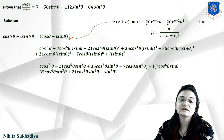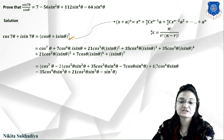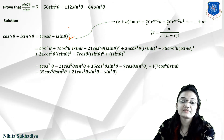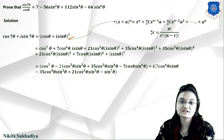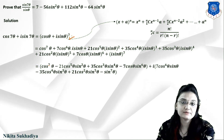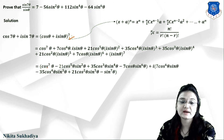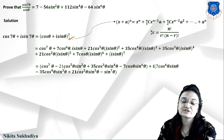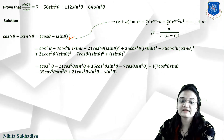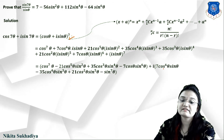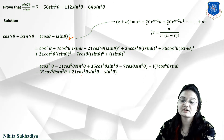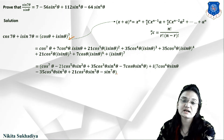Substituting powers of i: i² = −1, i³ = −i, i⁴ = 1, i⁵ = i, i⁶ = −1, i⁷ = −i. Separating real and imaginary parts: Real part = cos⁷θ − 21cos⁵θ·sin²θ + 35cos³θ·sin⁴θ − 7cosθ·sin⁶θ. Imaginary part = i(7cos⁶θ·sinθ − 35cos⁴θ·sin³θ + 21cos²θ·sin⁵θ − sin⁷θ).